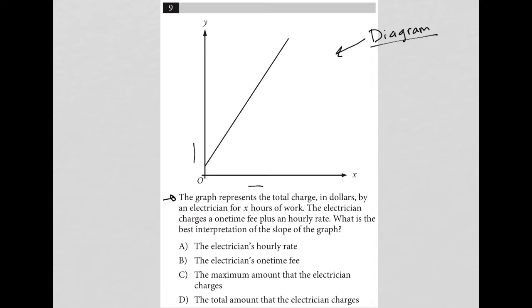So the question says the graph represents the total charge in dollars by an electrician for x hours of work. So this is hours for the x axis, and this is charge, which I'll just say dollar sign there.